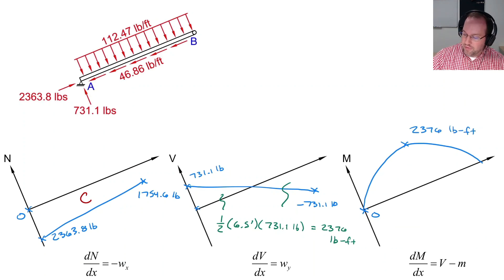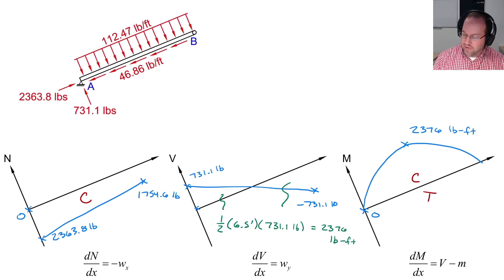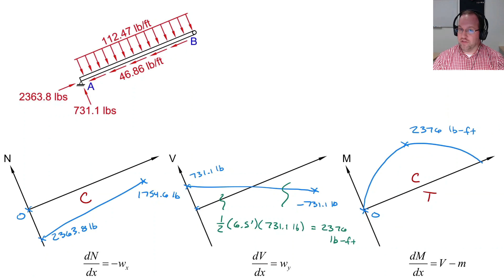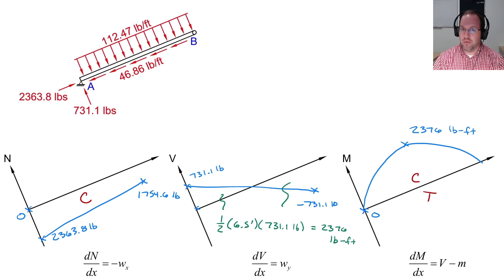We could calculate the axial, shear, and moment diagrams for BC, but because the problem is symmetric, those diagrams look the same as what we found for AB. That concludes our example. Thank you for watching — I hope you learned something. Please subscribe and I will see you next time.